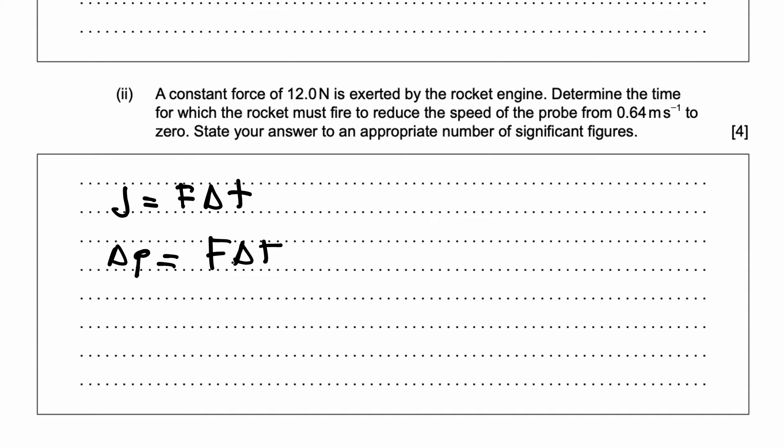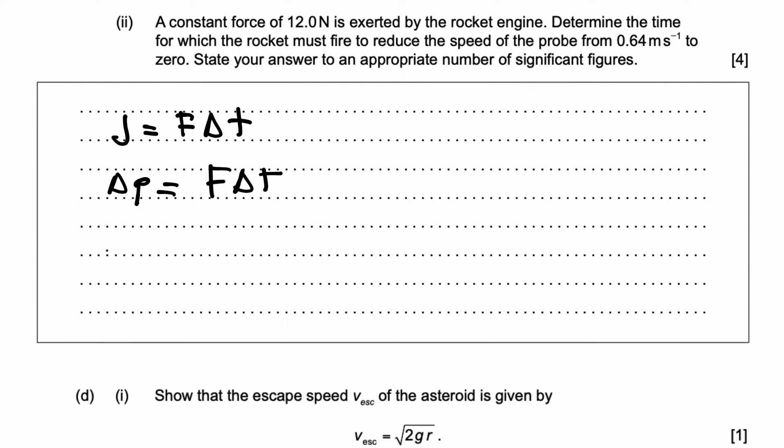Let's substitute all the values we know. What is the change in momentum? We know the change in momentum is mass into final velocity minus mass into initial velocity over the net force acting on the rocket. That will give me time. Now, let's calculate this. We can take mass outside. What's the change in speed? We know it's going from 0.64 to 0.